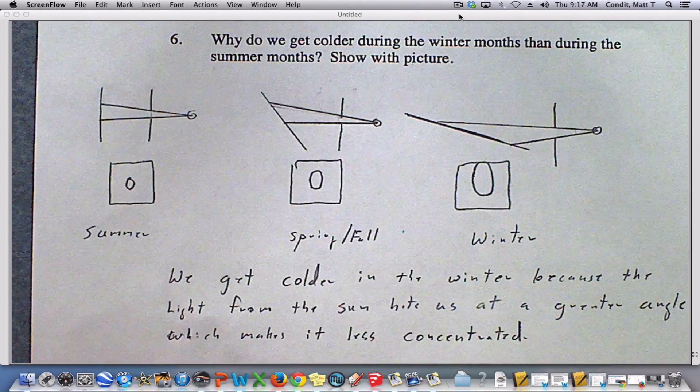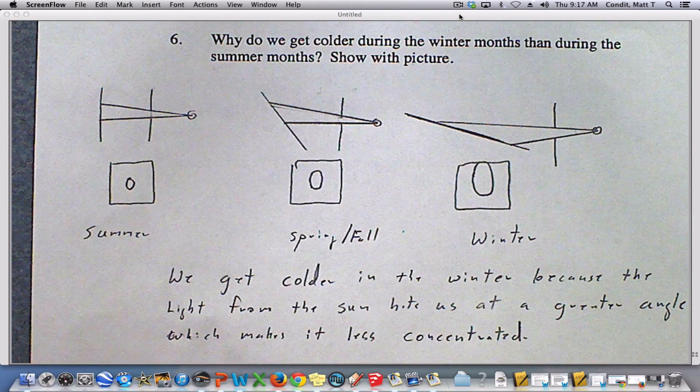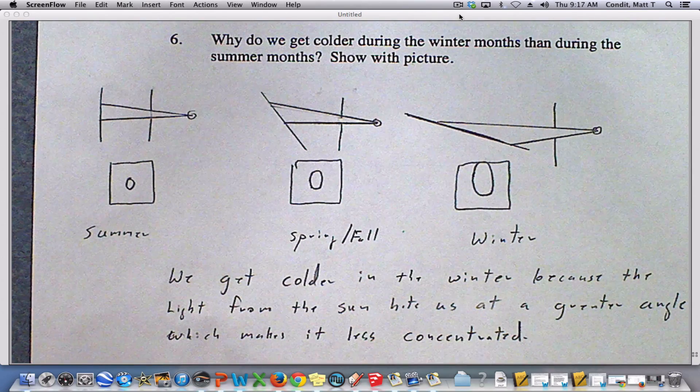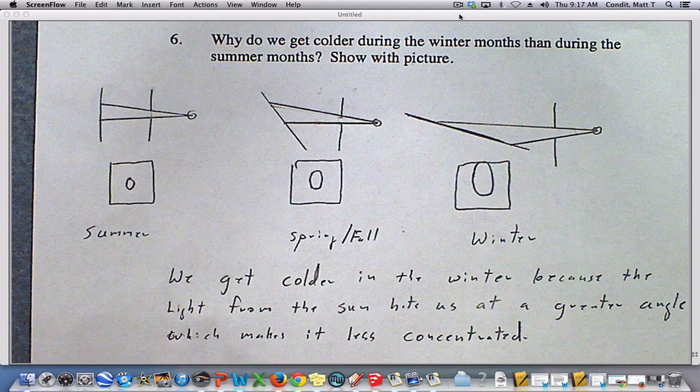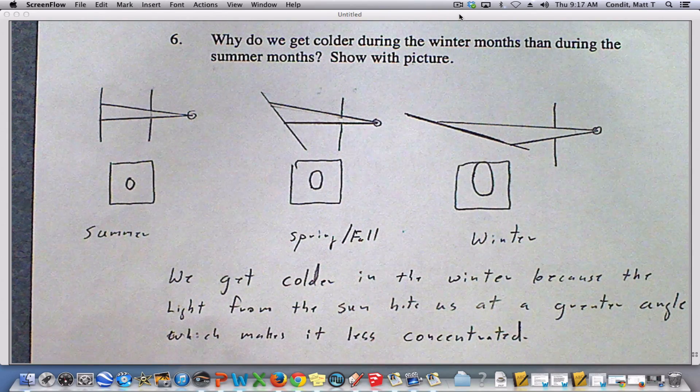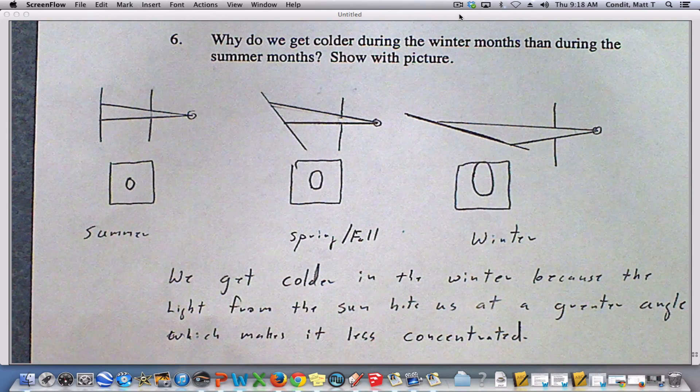So the answer is, we get colder in the winter months because the light from the sun hits us at a greater angle, which makes it less concentrated. And that's the key. You're spreading the same amount of energy out over a bigger distance, so we feel less heat from it.